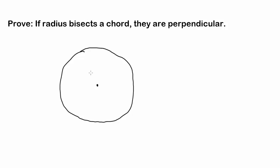So what do I mean by this? We have a chord, which is just connecting two points on the circle. Let's call it AB, and let's call the center of the circle O, as it's commonly called.